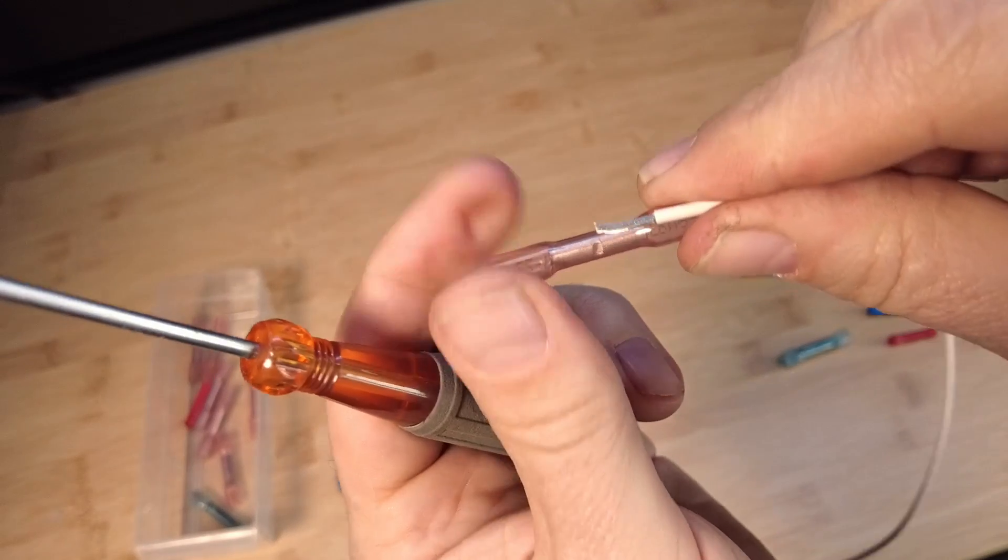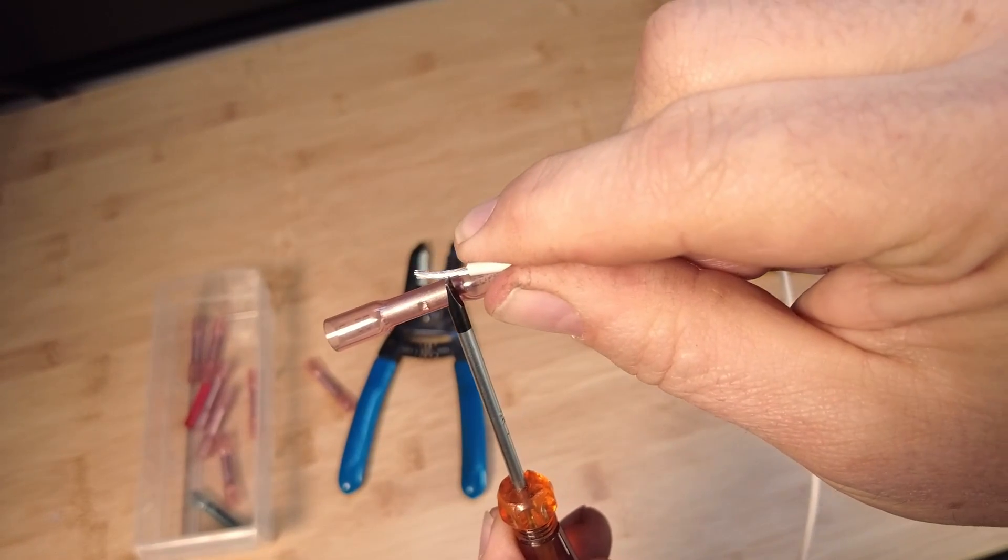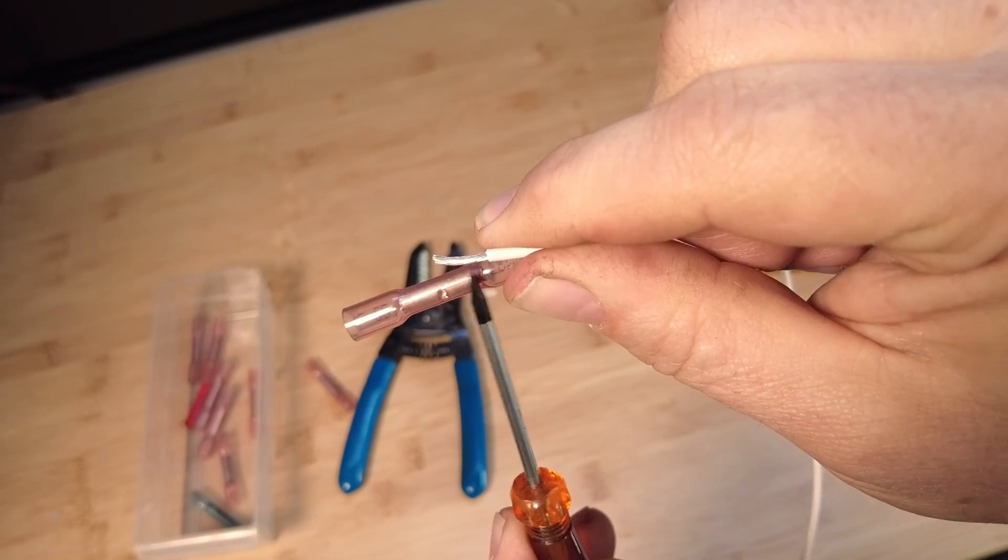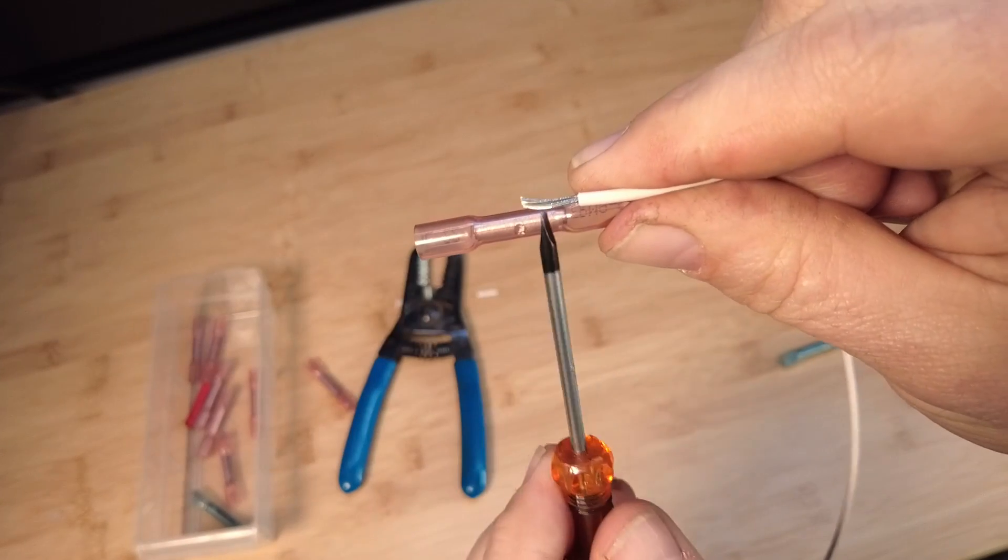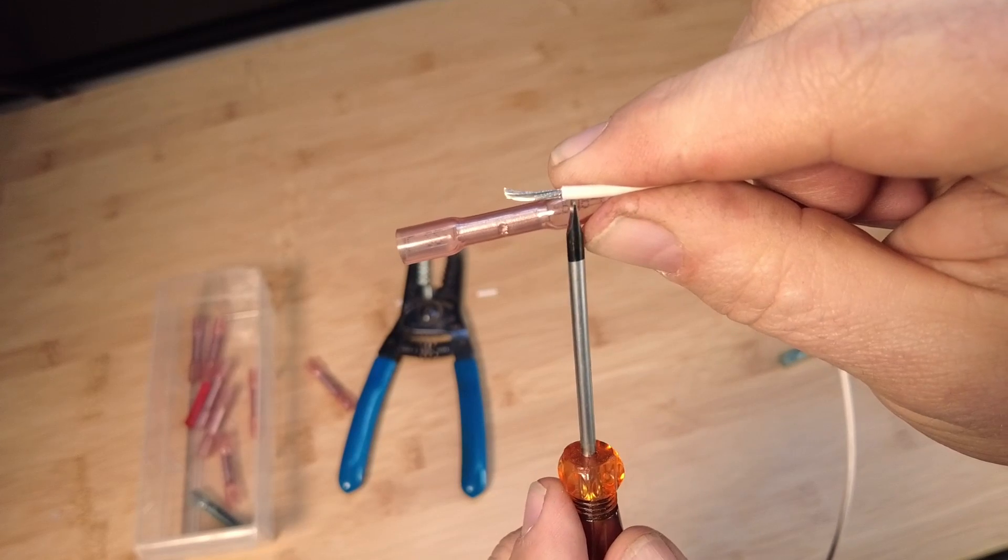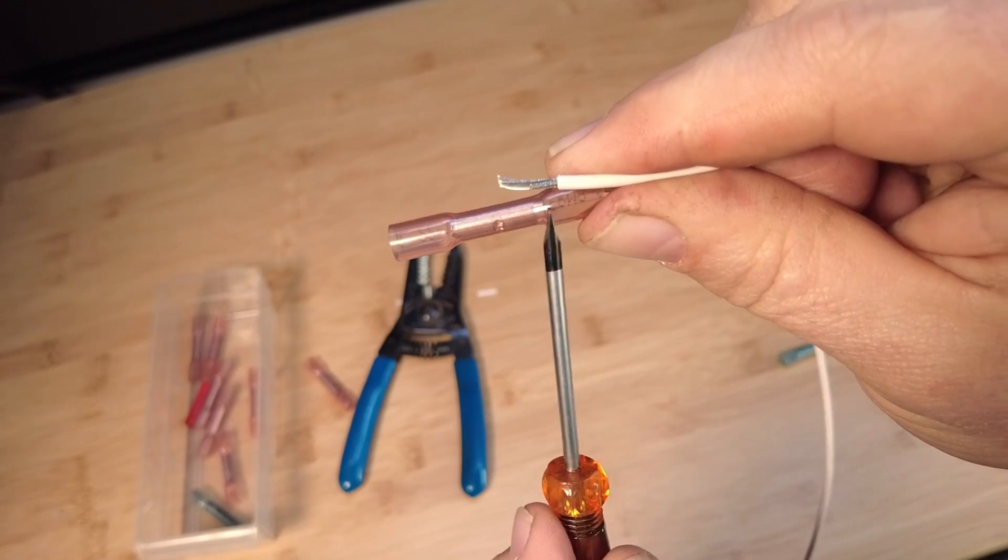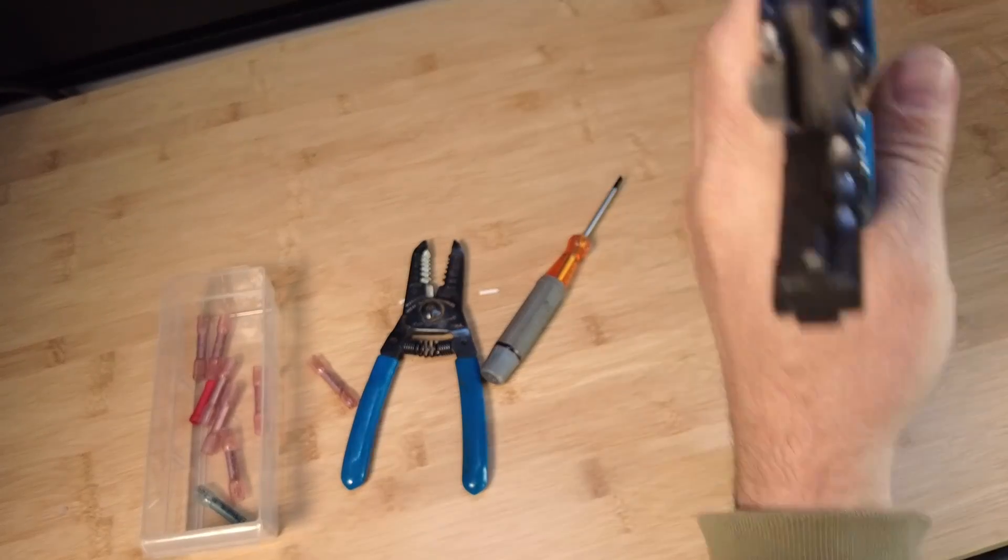then you run the risk of crimping on the insulation rather than on the copper. So I'd rather have a little bit more. You can always cut this off shorter too, but I'd rather have this stripped back a little bit more because it's still going to be well hidden under the heat shrink jacket.